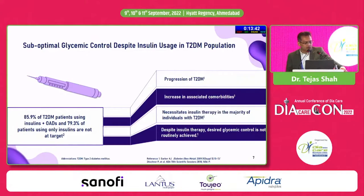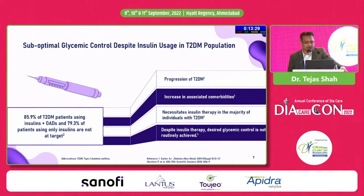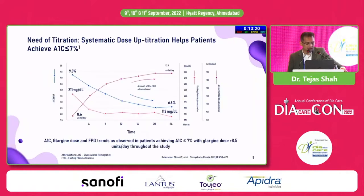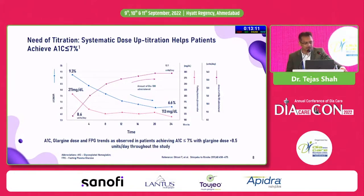85 to 90% of type 2 diabetic patients using insulin and oral drugs, and almost 80% of patients using insulin alone, are still not at target even after starting insulin. It could be because of the progressive nature of the disease, comorbidities, or the fact that titration and intensification do not happen — which is also a major cause. This is an interesting sub-analysis from the ALOHA study, which grouped people into four different categories.